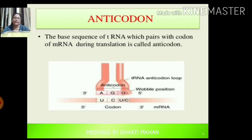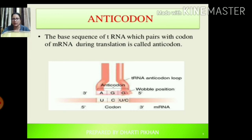Next we have the anti-codon. The base sequence of tRNA which pairs with the codon of mRNA is called an anti-codon. As you know from translation, the anti-codon is located at the anti-codon loop at the bottom of the tRNA structure.